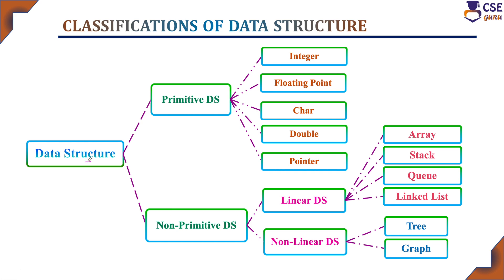Data structure is classified into two main categories: primitive data structure and non-primitive data structure. Primitive data structure is classified into integer, float, character, double, and pointer. Non-primitive data structures are again classified into two categories: linear and non-linear. Under linear data structure, we have array, stack, queue, and linked list. Under non-linear data structure, we have tree and graph data structures.